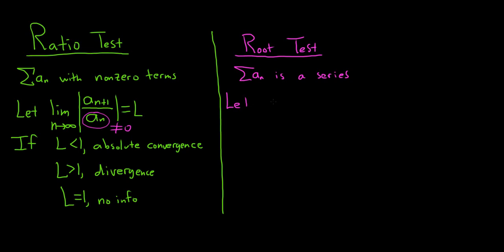And then we let the limit as n goes to infinity of the nth root of the absolute value of a sub n, we set this equal to L. And here again, L could be equal to infinity. And the beautiful thing is that the result is exactly the same.